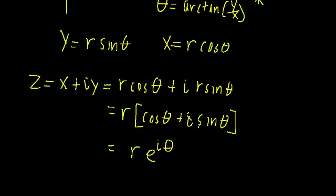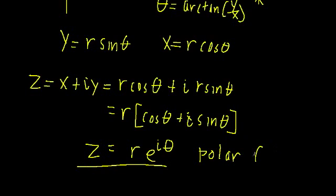We know that cos(θ) + i·sin(θ) can be written as e^(iθ) — that's Euler's formula. So we can use Euler's formula to rewrite complex numbers in a very neat, compact notation: Z = r·e^(iθ). This is what we call polar form. Just like Cartesian form, you can write every complex number in polar form given the right r and θ values.